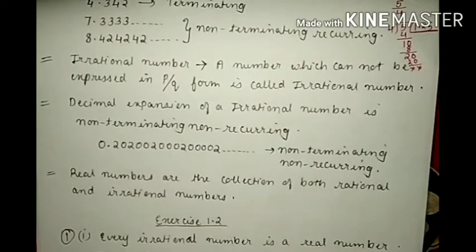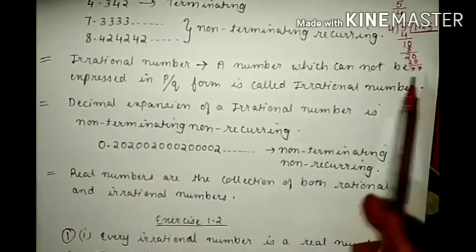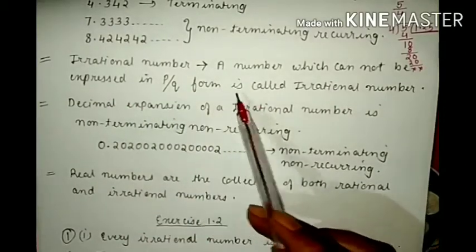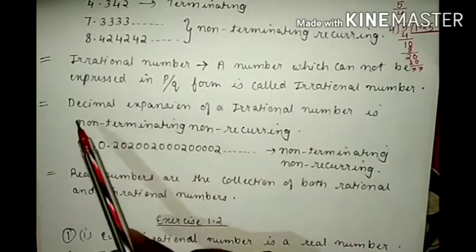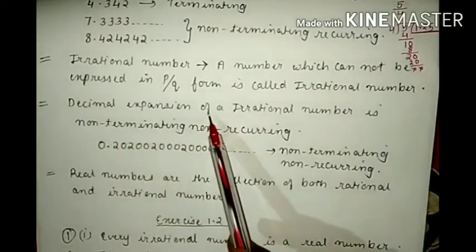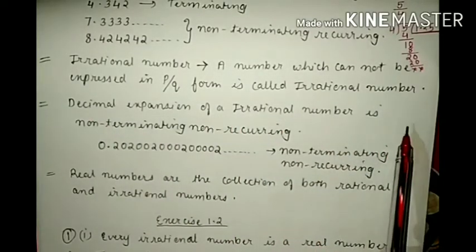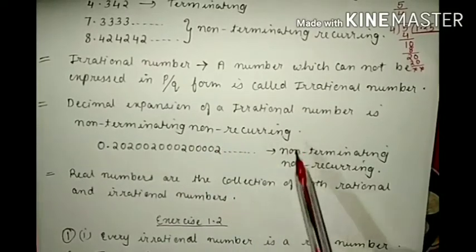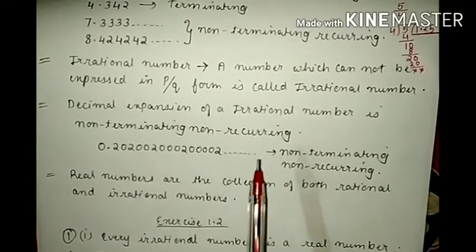Now, what is an irrational number? A number which cannot be expressed in P by Q form is called an irrational number. The decimal expansion of an irrational number is non-terminating non-recurring — that means it will neither terminate nor will it repeat itself.